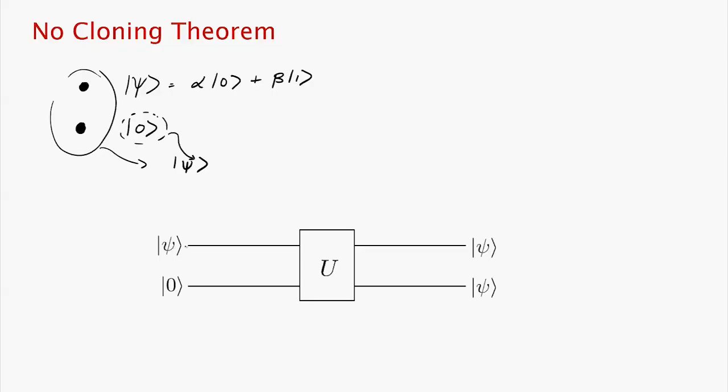Okay so let's formalize this problem. We are given a state psi, we're given a state zero. We want to apply some unitary transformation to them and we want to get to the state psi tensor psi. Is there a unitary transformation that achieves this? This is one simple way of formalizing this question.